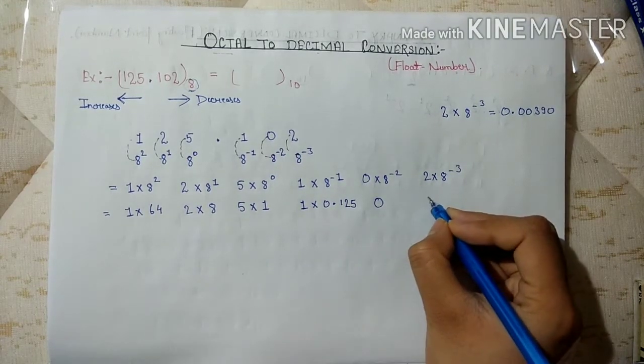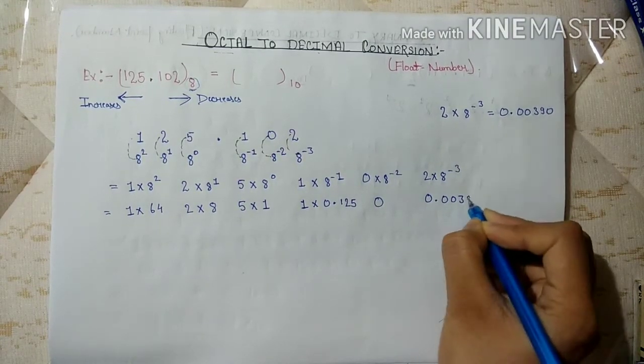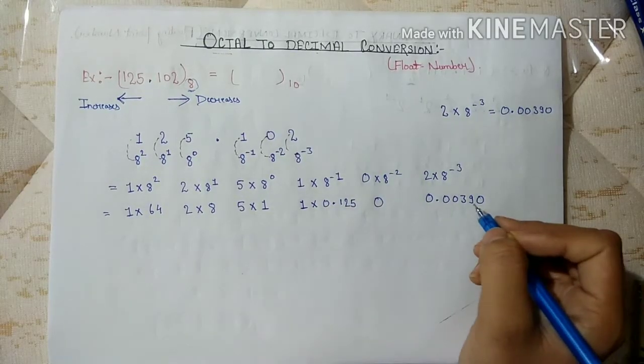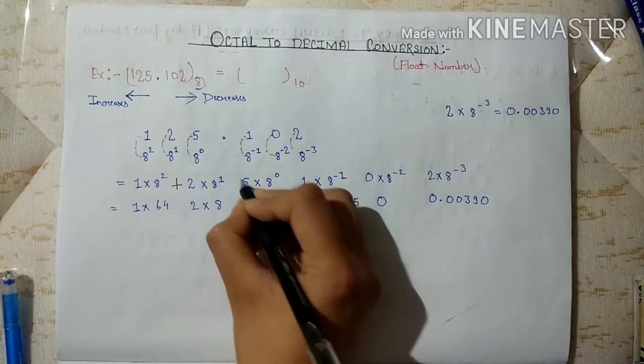So we write here 0.00390. Now, put plus sign between all of these.